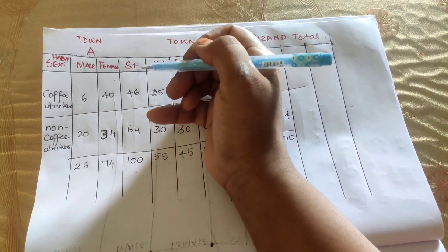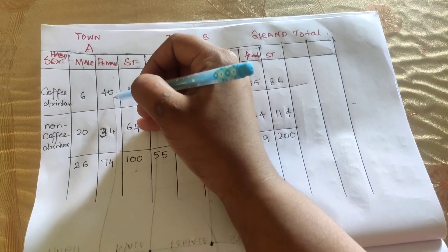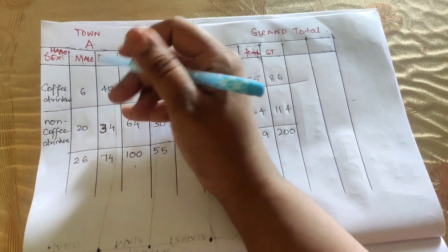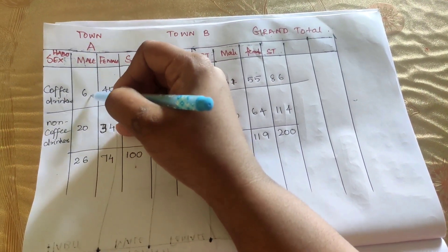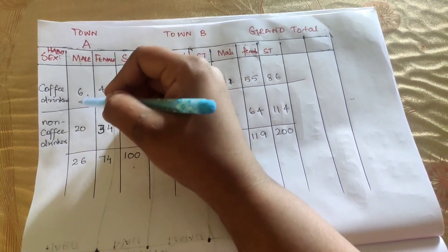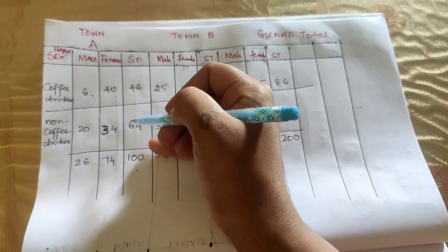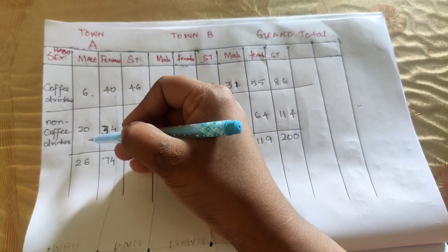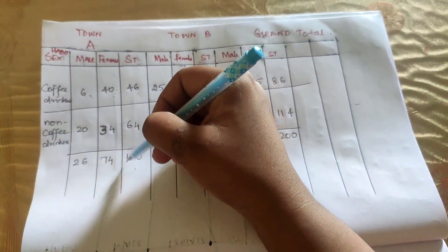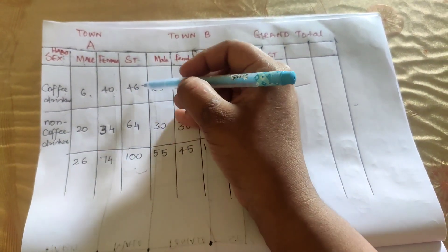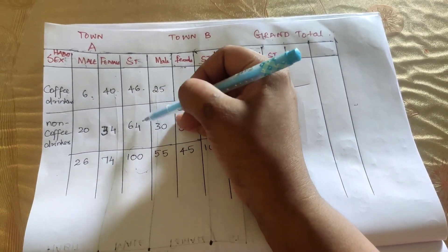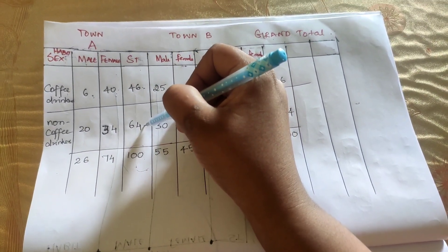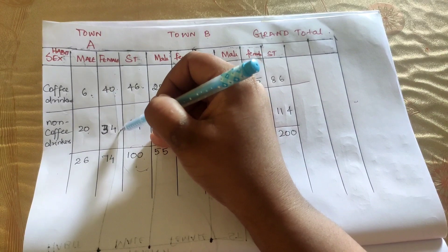Overall coffee drinkers in Town A are 46, which means 6 are from the male category. Male non-coffee drinkers are 20. We take the overall value as 100. We know coffee drinkers total is 46, so non-coffee drinkers are 100 minus 46, which gives 64. Then 64 minus 20 gives us 44 as female non-coffee drinkers.